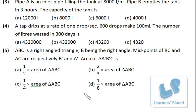Now see this question. ABC is a right angle triangle, B being the right angle. Midpoints of BC and AC are respectively B' and A'. Area of triangle A'B'C is...